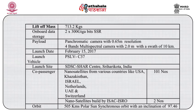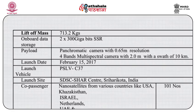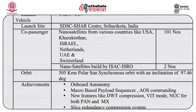Come to CartSat-2. The lift mass of this satellite is 713.2 kg. The onboard data storage is 2 × 300 gigabits SSR. Payloads include a PAN with 0.65 meter resolution and a 4-band multispectral camera with 2 meter resolution and a swath of 10 km. It was launched on February 15, 2017, on launch vehicle PSLV-C37 from SHAR, Sriharikota, India. Co-passengers were from USA, Israel, Netherlands, UAE, and Switzerland — totaling 101 satellites, including 2 nanosatellites built by ISRO.